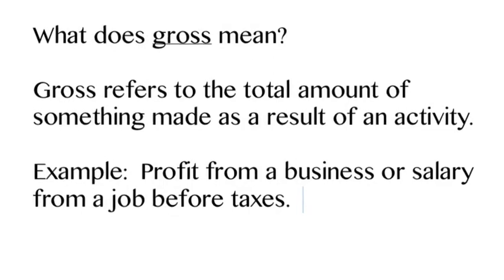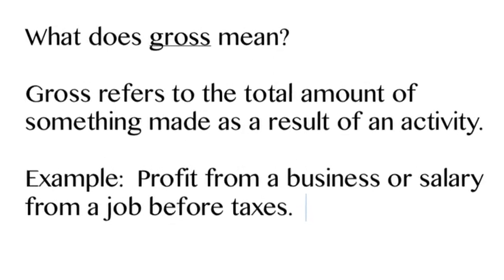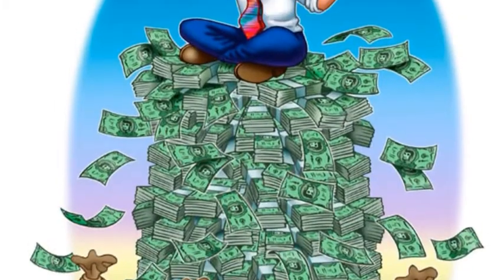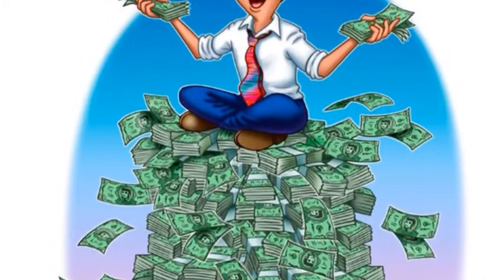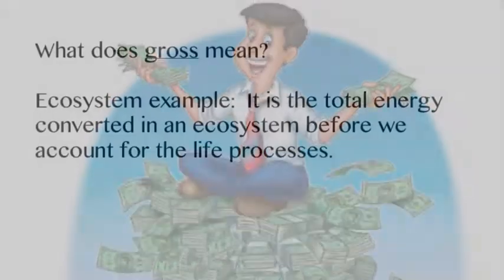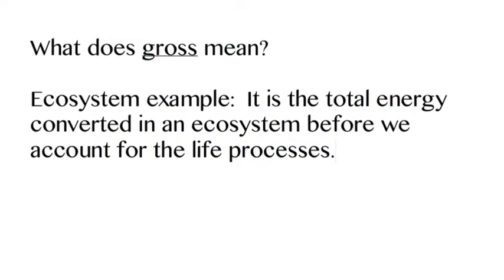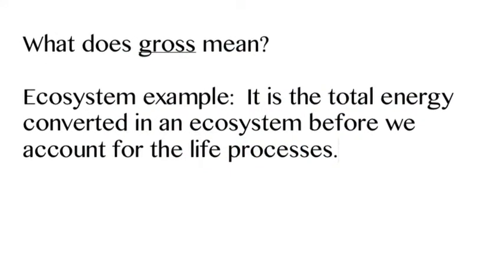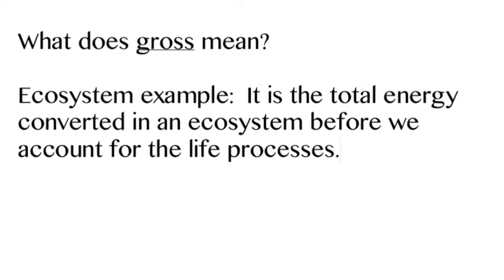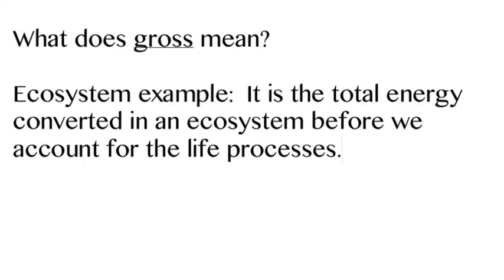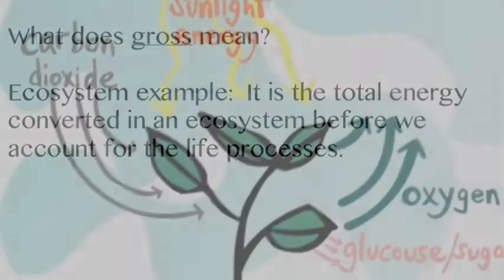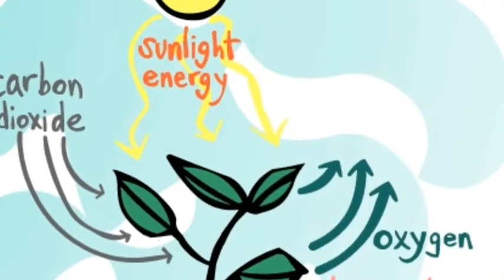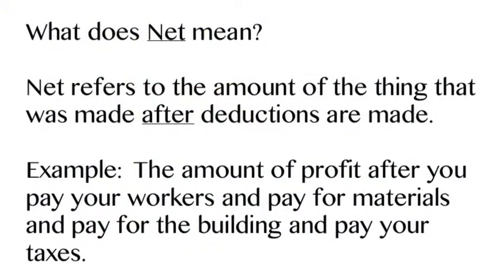We have terms like gross and net with productivity. What does gross mean? Gross refers to the total amount of something that's made as a result of an activity — so your total profit or your total paycheck, your salary. But in an ecosystem, it's the total amount of energy that's made before we account for any of the life processes. If you're really thinking about it, that's really just photosynthesis — the total amount of photosynthesis that is taking sunlight and turning it to glucose.